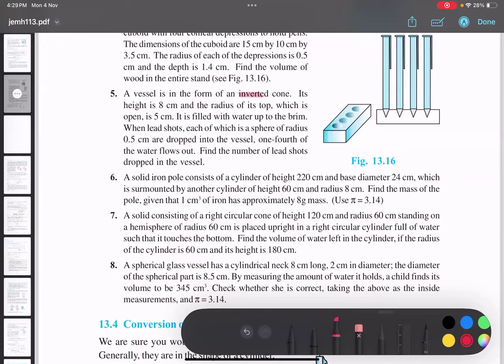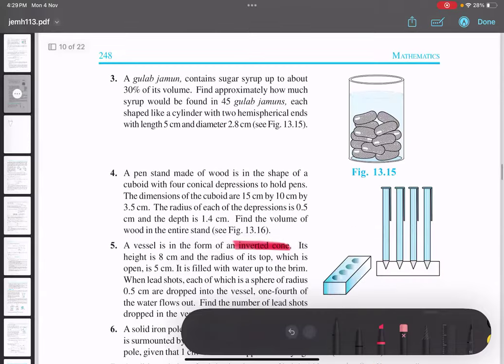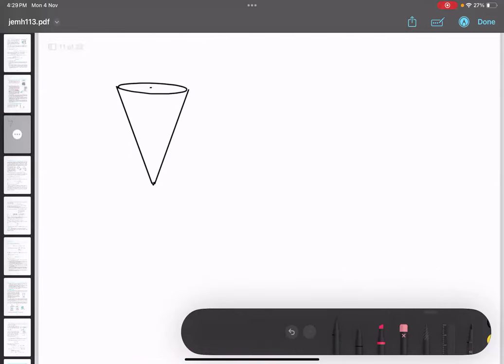Now the vessel is in the form of an inverted cone. So an inverted cone is like this. This is the inverted cone. Its height is 8, and the radius, which is open at the top, is 5. They have told us very clearly. The opening from the top is 5. So radius is 5 and height is 8.